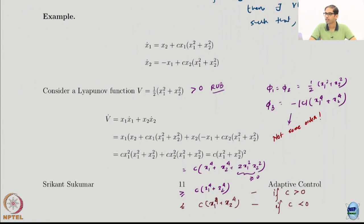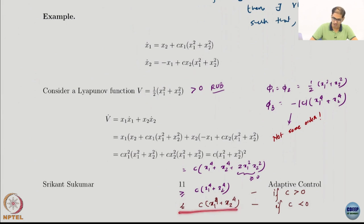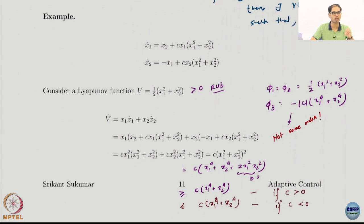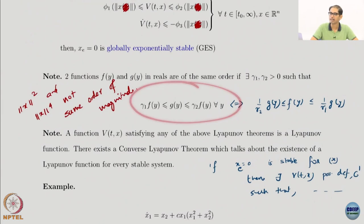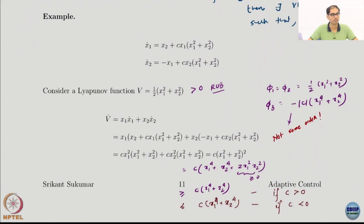Remember this is not exponential stability. For exponential stability we need three same-order class-K functions. Here the class-KR function for V is of one order and for V-dot it is of a higher order — (x1⁴+x2⁴) — so they are not the same order of magnitude and the comparison with constants cannot be made. Not exponentially stable, but uniformly globally asymptotically stable (UGAS or GUAS depending on your source).